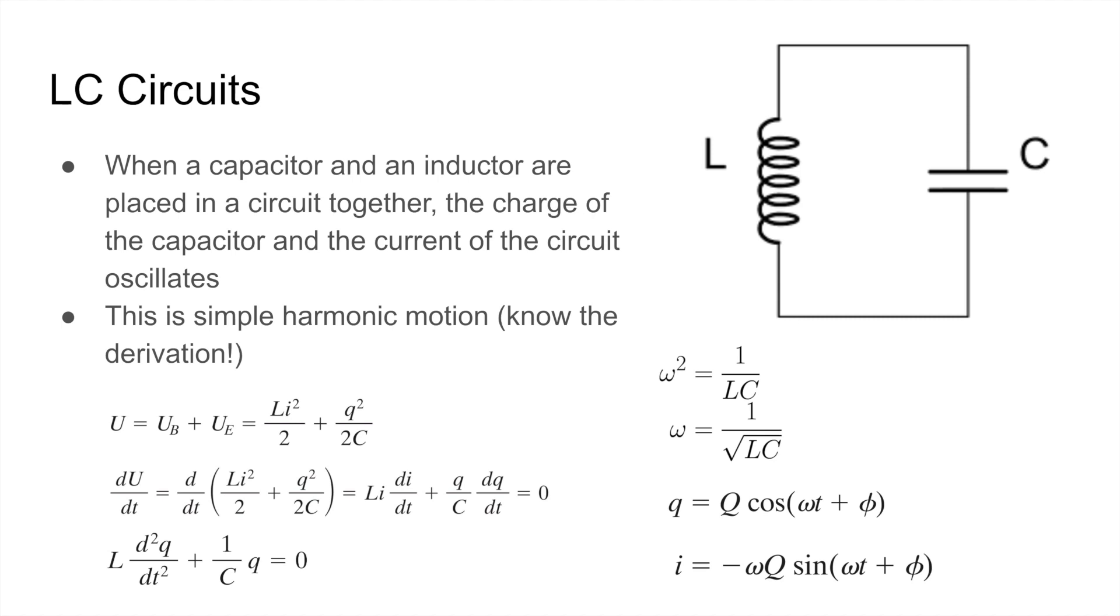Now this next concept is in chapter 31, but it's worth lumping it into chapter 30 because it's so similar. So when a capacitor and an inductor are placed in a circuit together, the charge of the capacitor and the current of the circuit oscillates, and this is in simple harmonic motion. So we'll derive this using the equations below. Recall that the energy of an inductor is 1 half LI squared, and the energy of a capacitor is Q squared over 2C. So the total energy of this circuit would have to be LI squared over 2 plus Q squared over 2C.